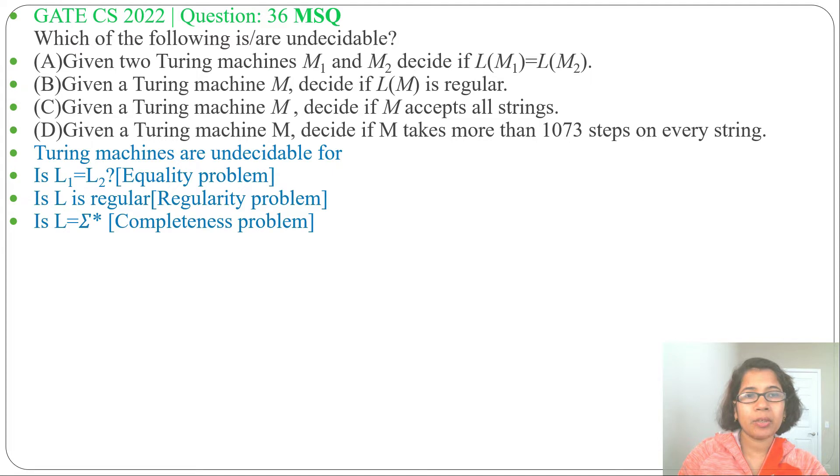Now option A: given two Turing machines M1 and M2, decide if L of M1 equals to L of M2. This comes under equality problem. We need to check whether both Turing machines are equal or not, and that is undecidable.